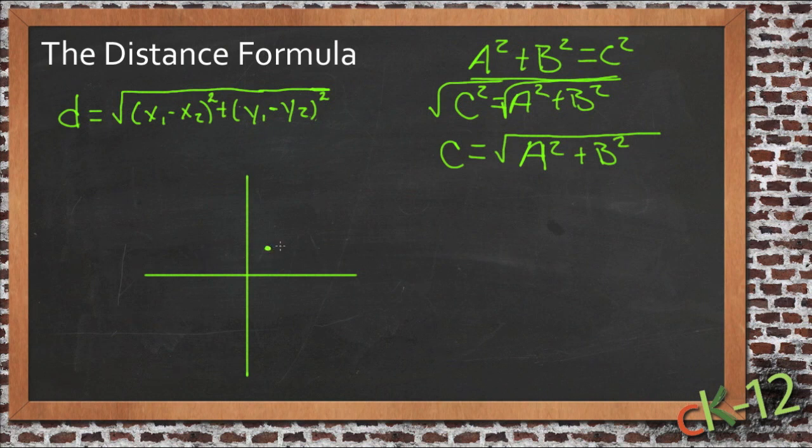Let's say we have one at x is 2 and y is 3. And then we have another point over here at x is negative 4 and y is 7. So if we have these two points, what the distance formula does is tell us the distance between them all in one shot without having to do any other calculations.